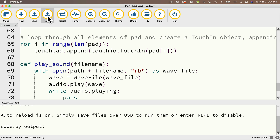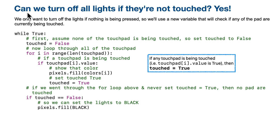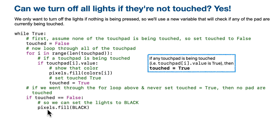We want to only turn off the lights if we don't detect any touch on any of the seven pads. So we're first going to create a value named touched — a Boolean value, either true or false — and we'll initially set it to false, meaning no pads have been touched. But when we loop through our touchpads, if touch_pad[i].value is true, we've detected a touch on one of the pads, so we set the touched value to true. Then after going through the entire list in this for loop, if none of the pads were touched, touched will still be false — and if that's the case, we turn the lights off.